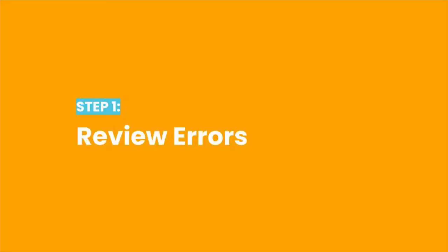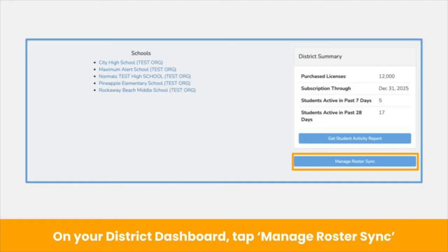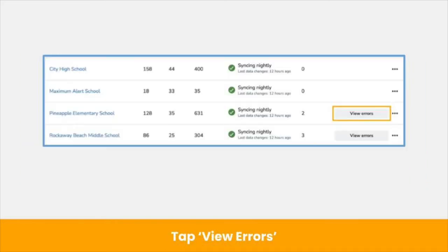In order to review errors, first you'll want to check your roster sync dashboard. Navigate to your Seesaw district dashboard and tap Manage Roster Sync. In your roster sync dashboard, errors are broken down school by school. To view errors affecting a school in Seesaw, tap the View Errors button that appears next to the school.